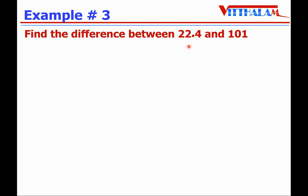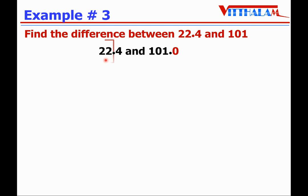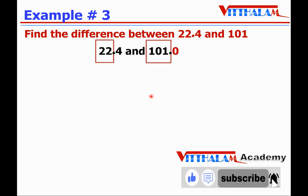Find the difference between 22.4 and 101. Convert them into like decimals — here there is one digit in the decimal part, and here there is none, so put a decimal point and annex a zero. To find the difference, we first compare both decimals. The whole part 22 vs 101 — 101 is greater, so 101.0 is greater than 22.4, and we will subtract 22.4 from 101.0.